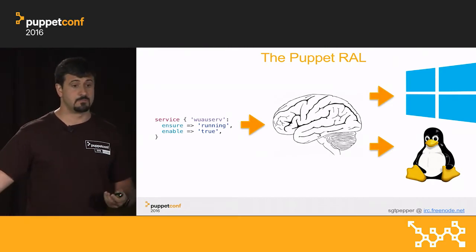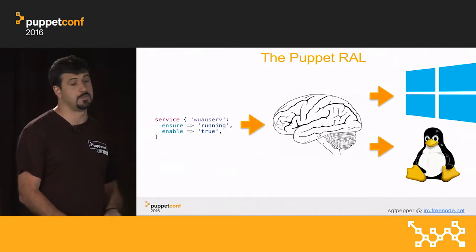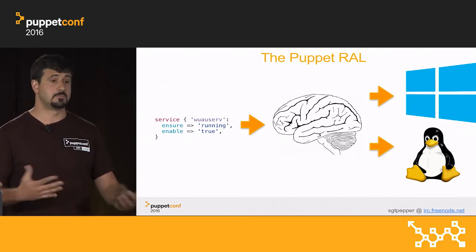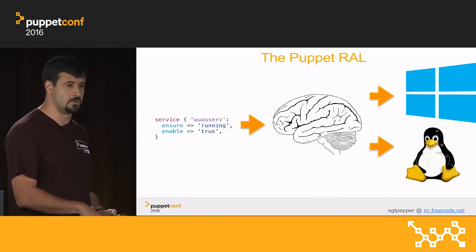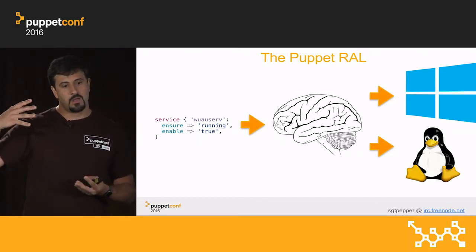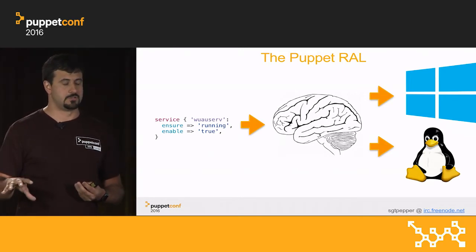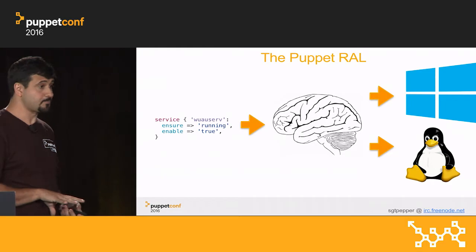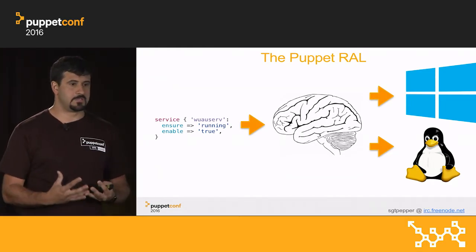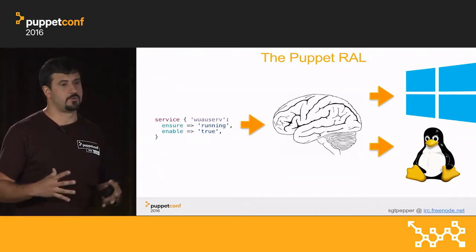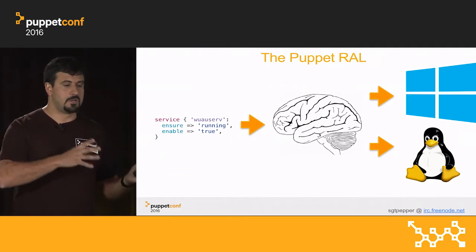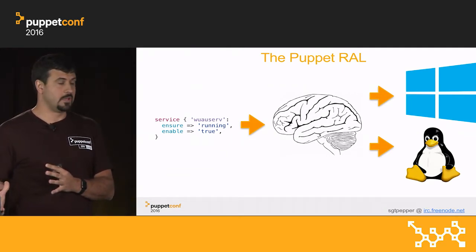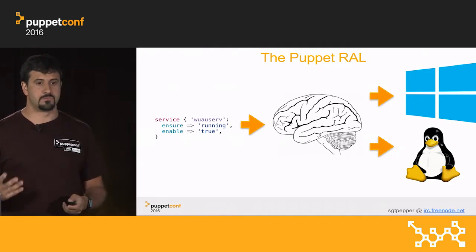For example, if it is a service, what's the current state of the service and if it should be enabled at boot time. If it is a file, it would be the content, the permissions, and so on. And then you have the bits that actually handle the implementation of the resources, which in the abstraction layer are called providers. That's what allows Puppet to be platform independent — Puppet knows how to apply a desired state on different platforms, regardless of the resource.